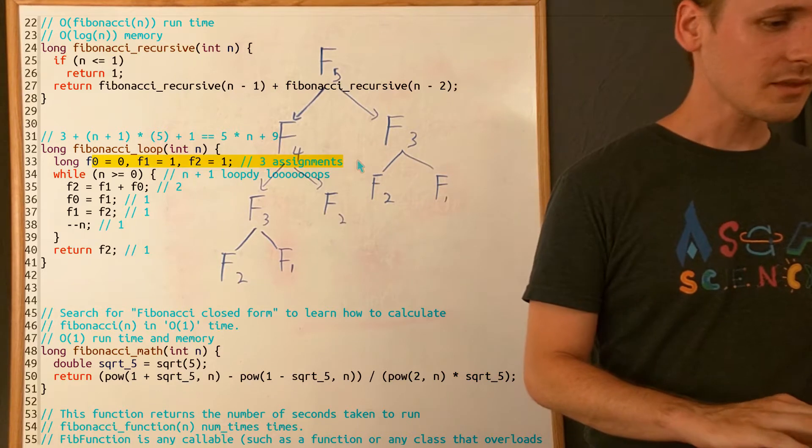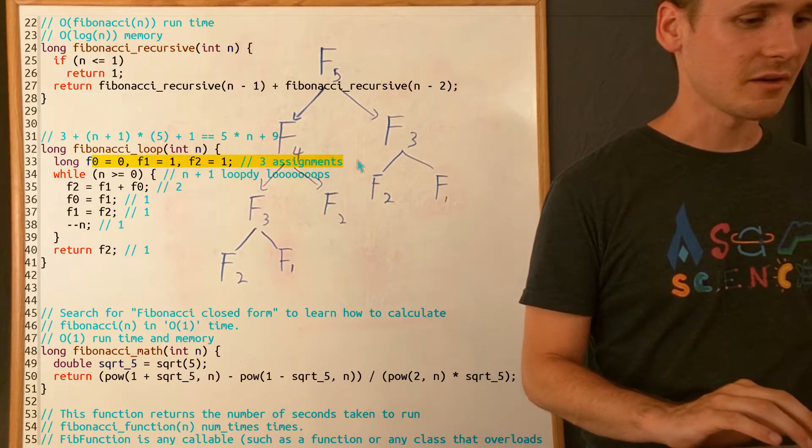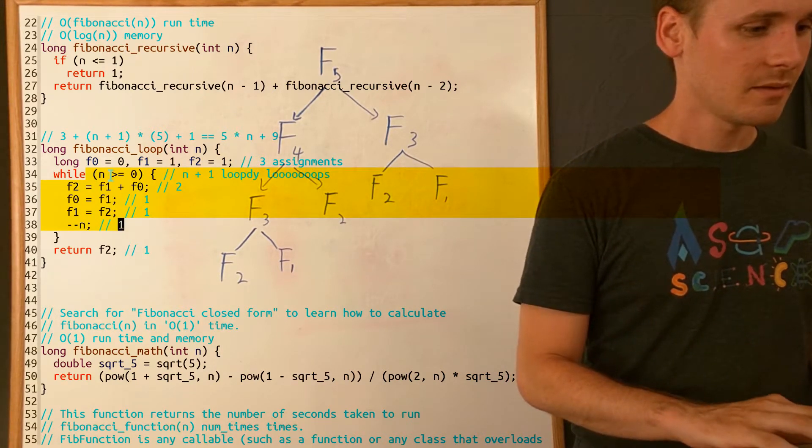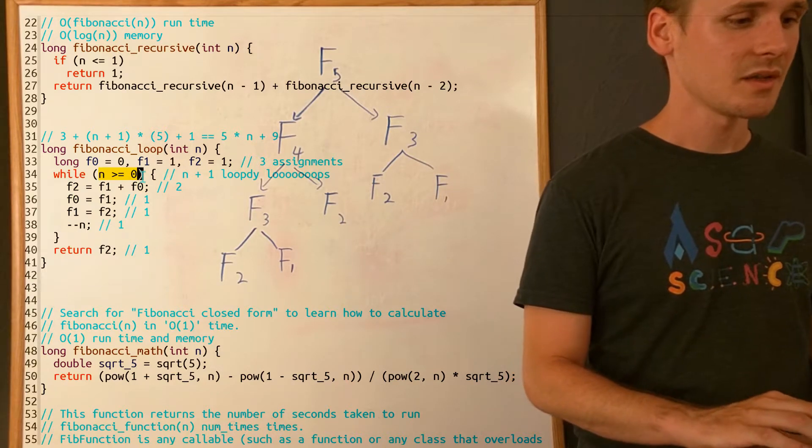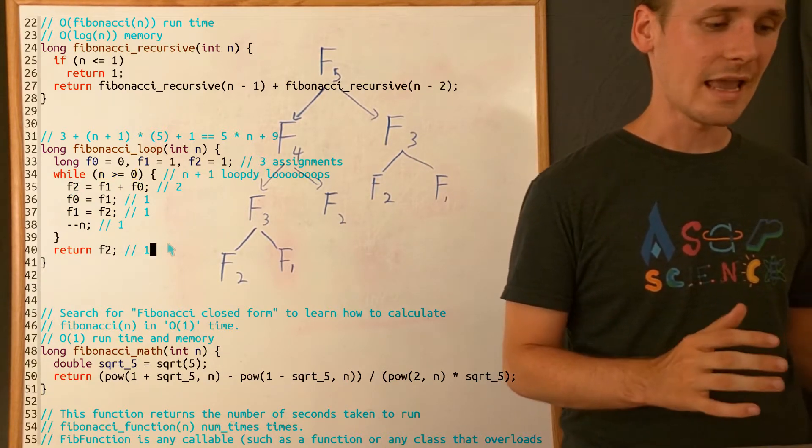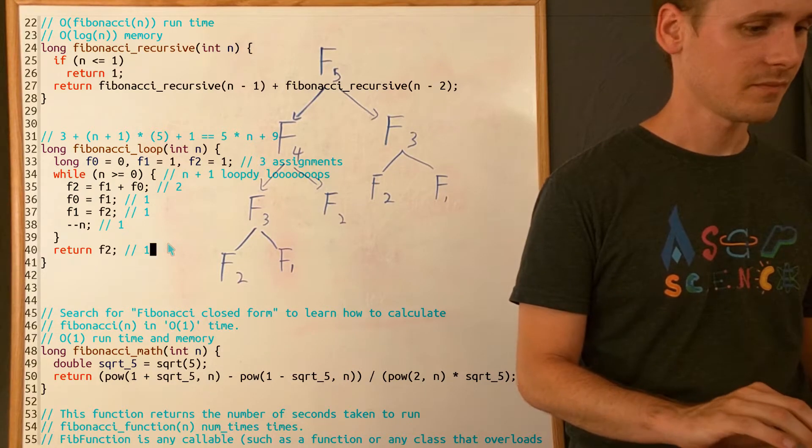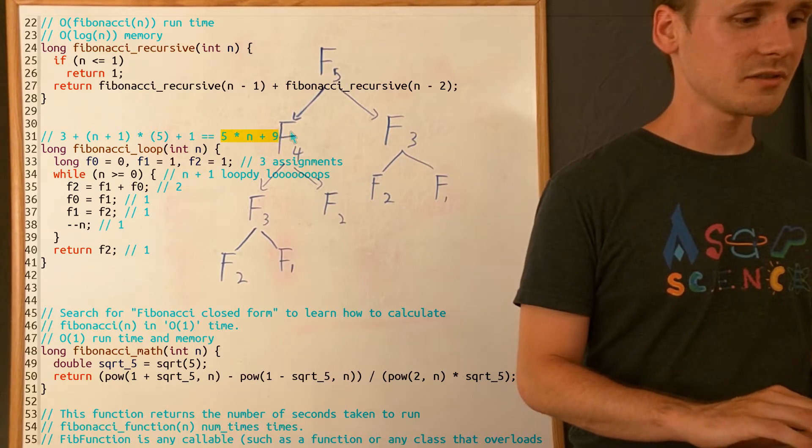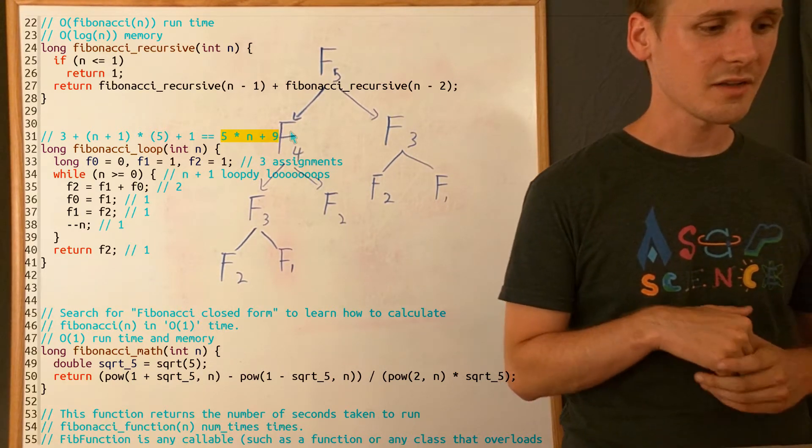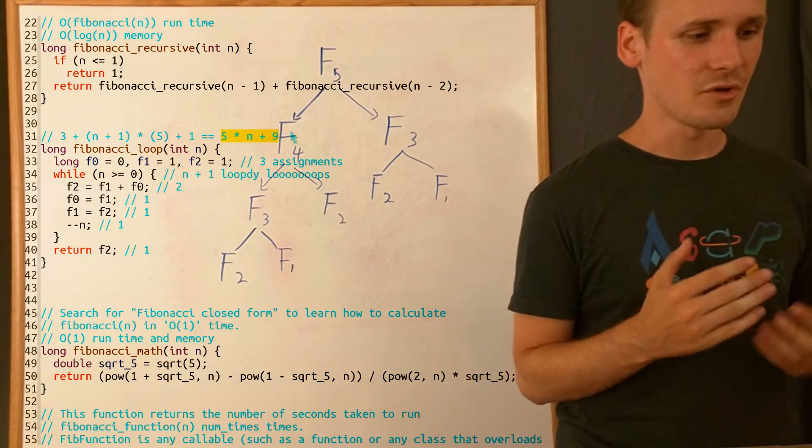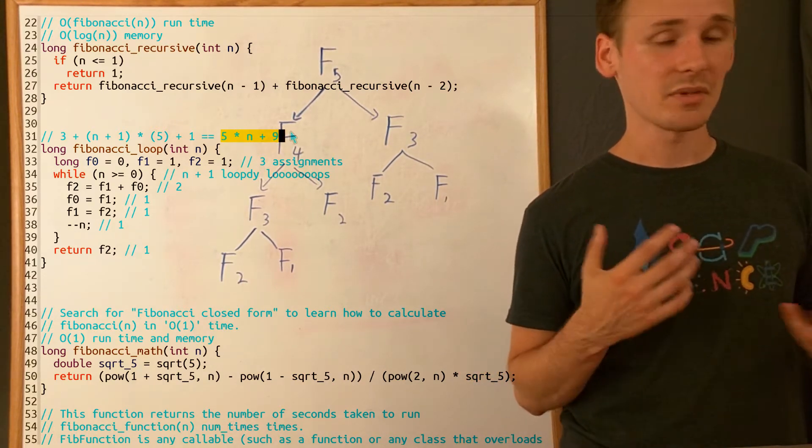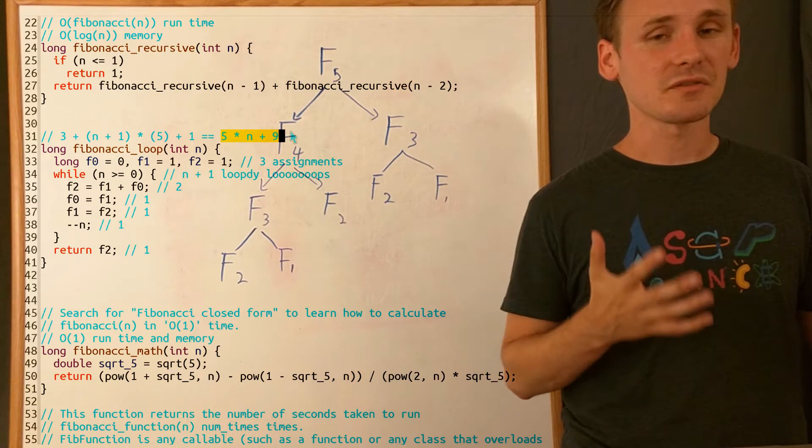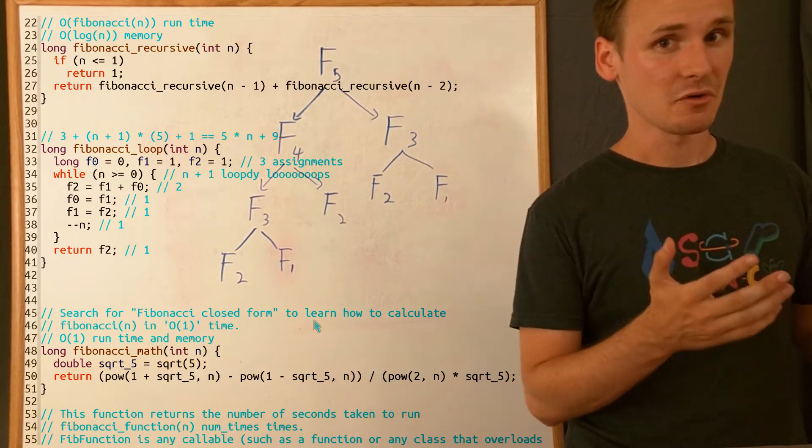And this one is linear. Even though we have some steps here, a lot of these steps only happen exactly one time. These steps in the loop happen multiple times, but we know that they happen roughly n times. So the total number of steps for this version of the Fibonacci function is just 5 times n plus 9. Now, we don't know which of these steps actually take more or less time, but it's actually not super important. The important thing is that this is roughly how much it grows, and this is linear, or O(n).